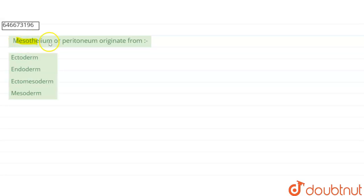Our question asks: Mesothelium or peritoneum originates from - first is ectoderm, second is endoderm, third is ectomesoderm, and fourth is mesoderm. So let's examine each option.